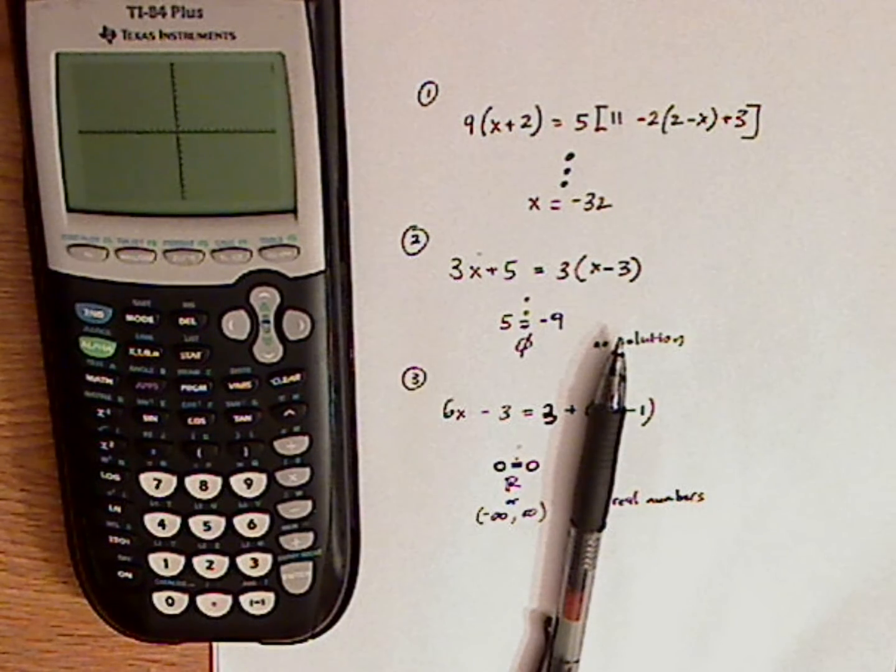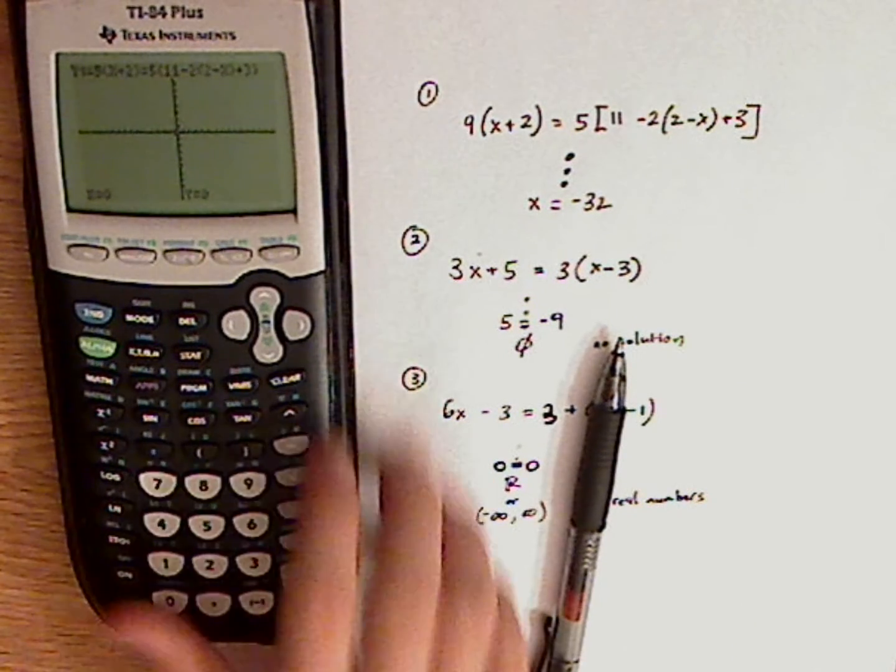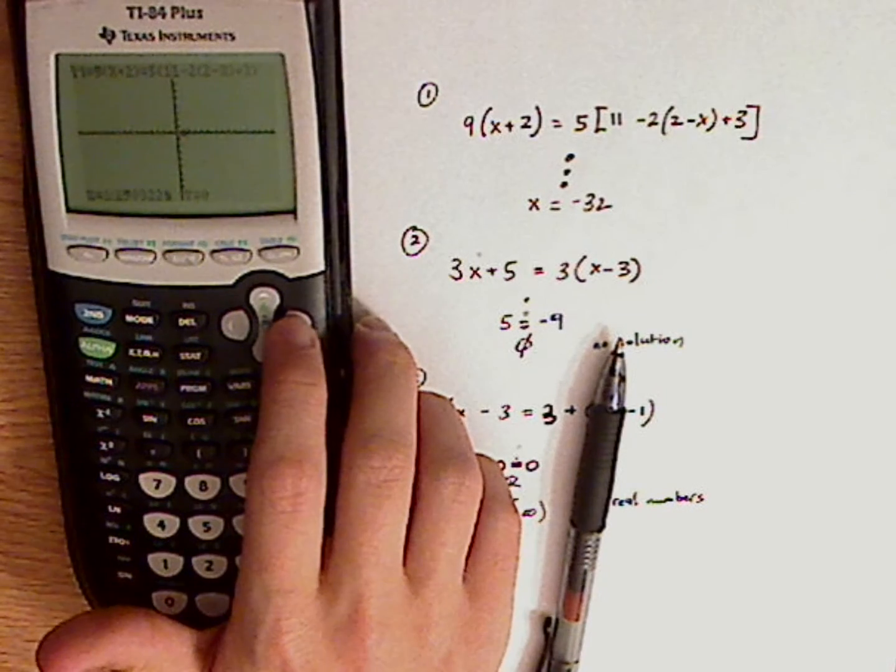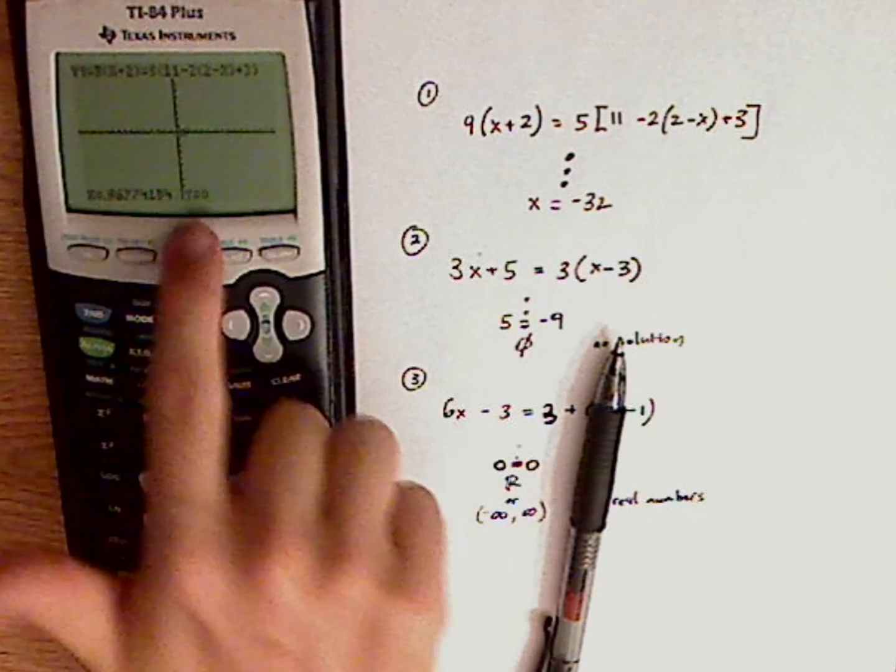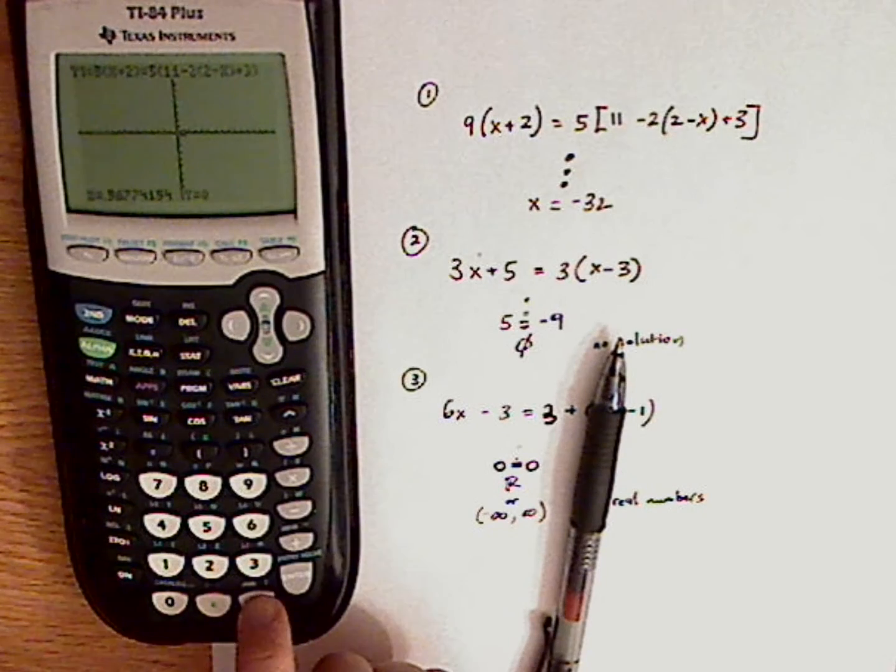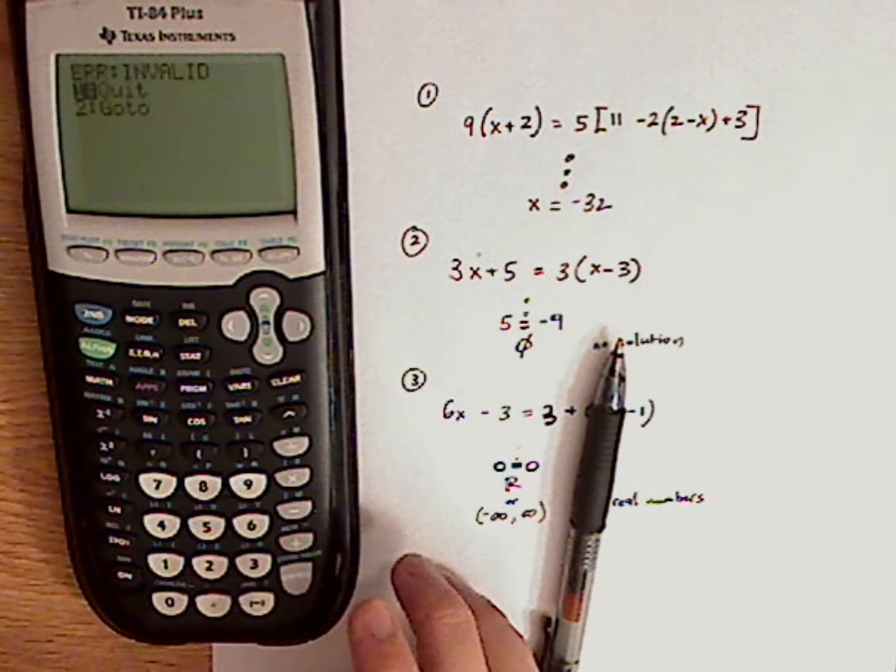But you're not going to see anything. Push trace. Now if I were to click over, nothing's really happening and y is pretty much staying the same. If I push x equals negative 2, it's invalid because it's going to fall off the graph.